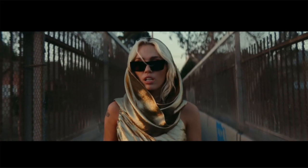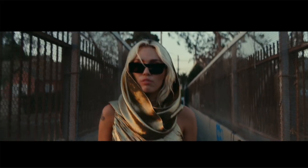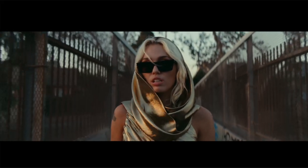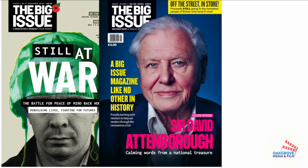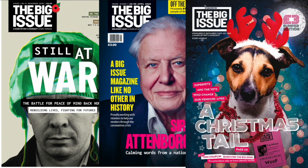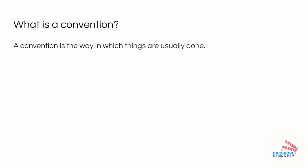In pop music videos, performers relating to the camera is conventional, along with cuts to the beat. In magazines, having a distinctive masthead at the top is conventional, as is having a cover model. Conventions are simply the way in which things are usually done — it is what the audience and consumer expects from a specific media form and/or genre.